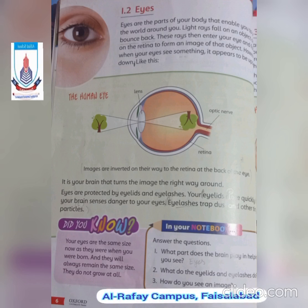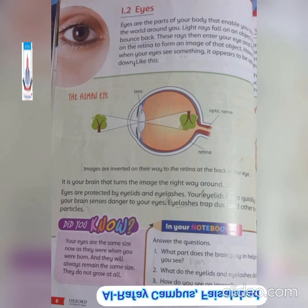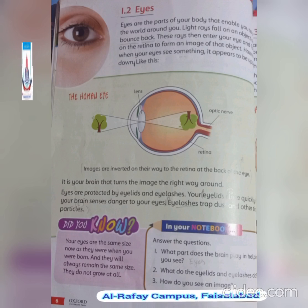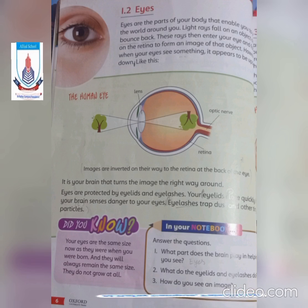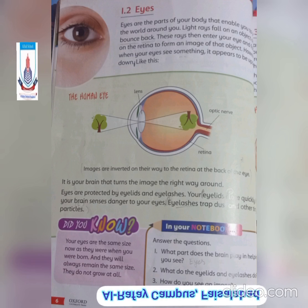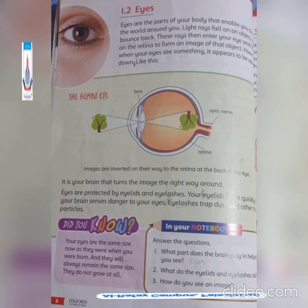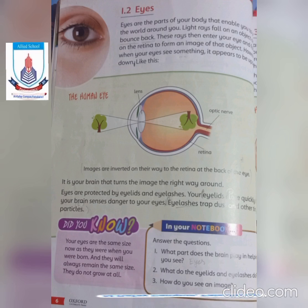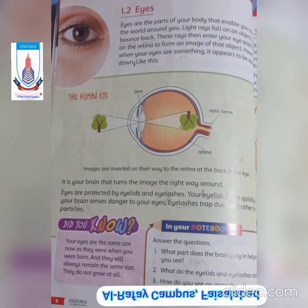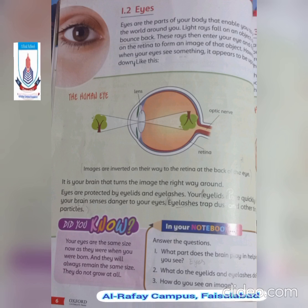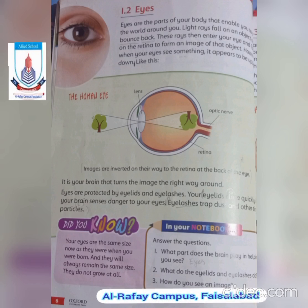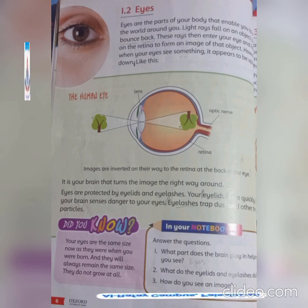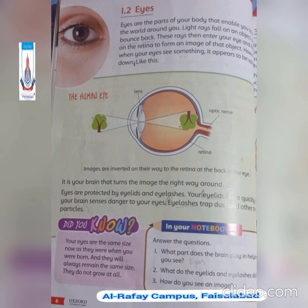Eyes are protected by eyelids and eyelashes. Your eyelids close quickly if your brain senses danger to your eyes.